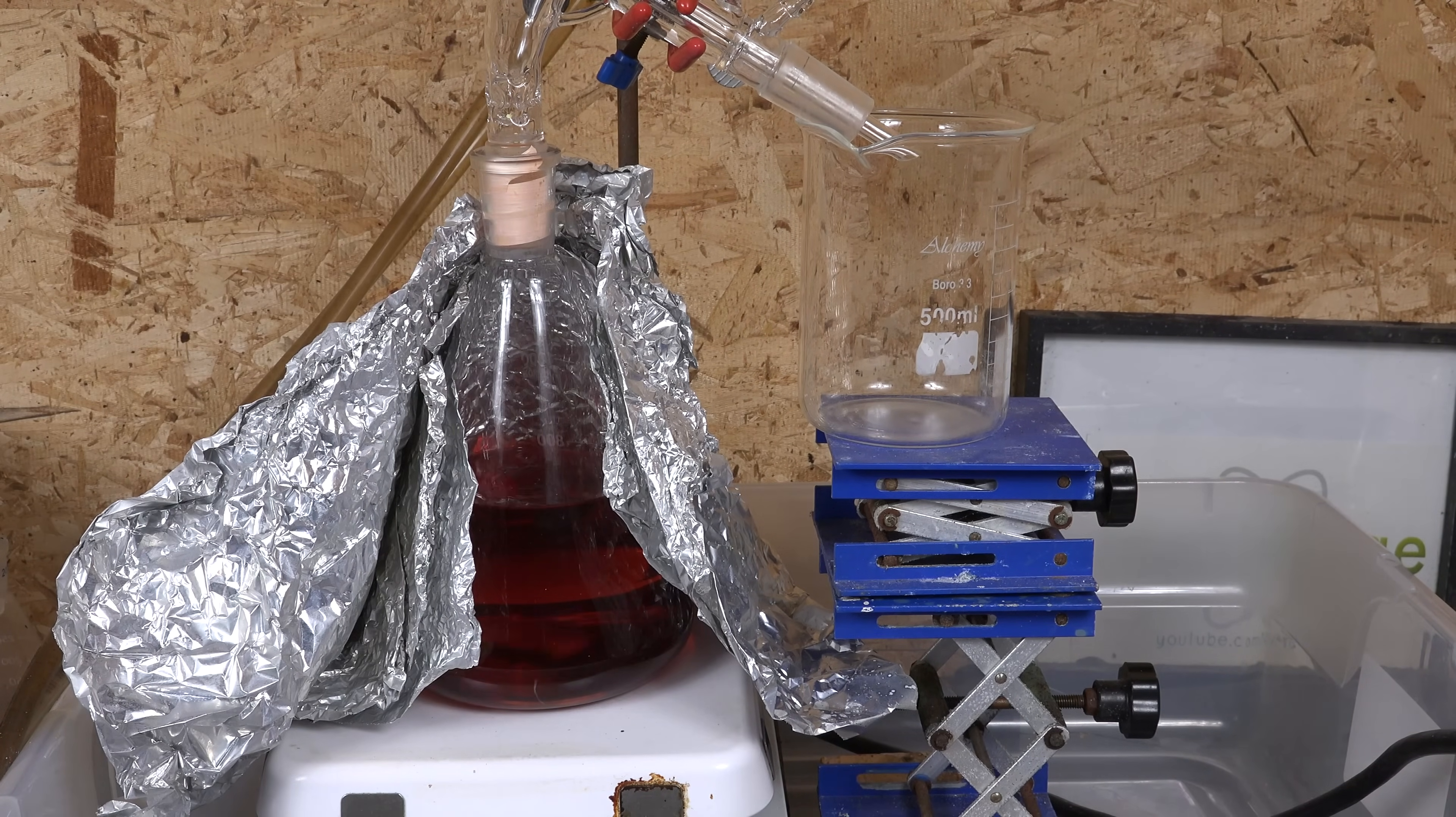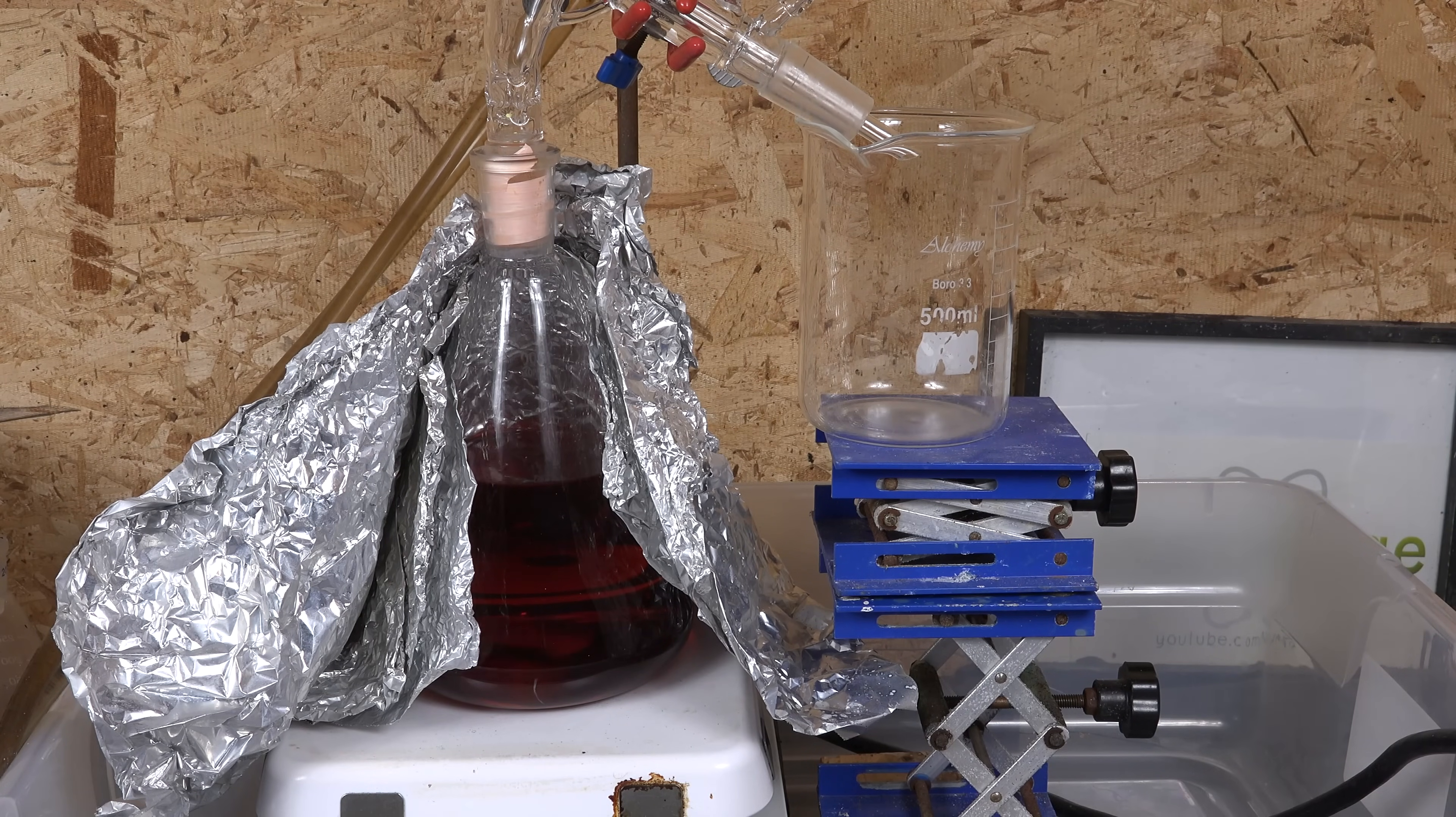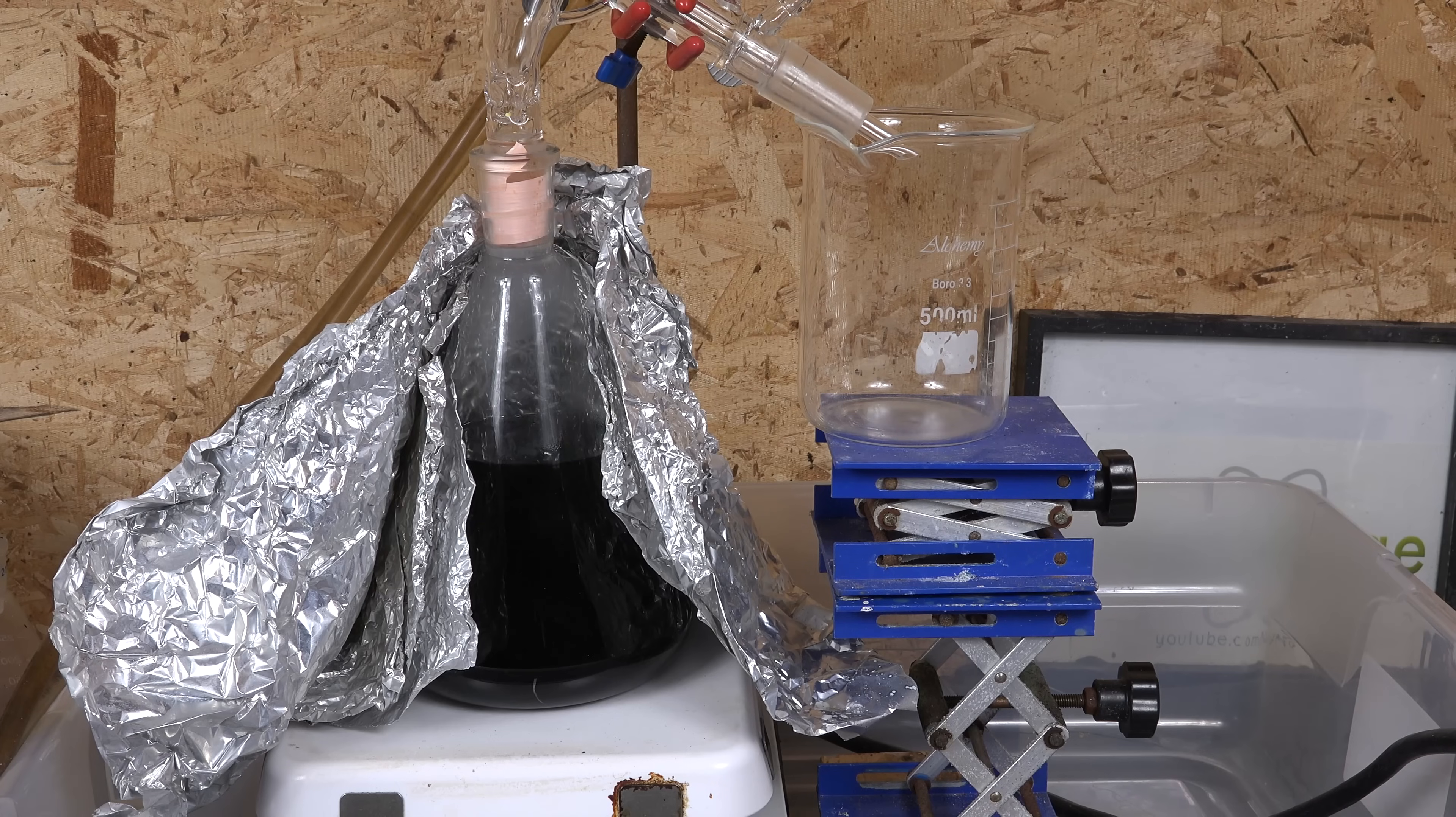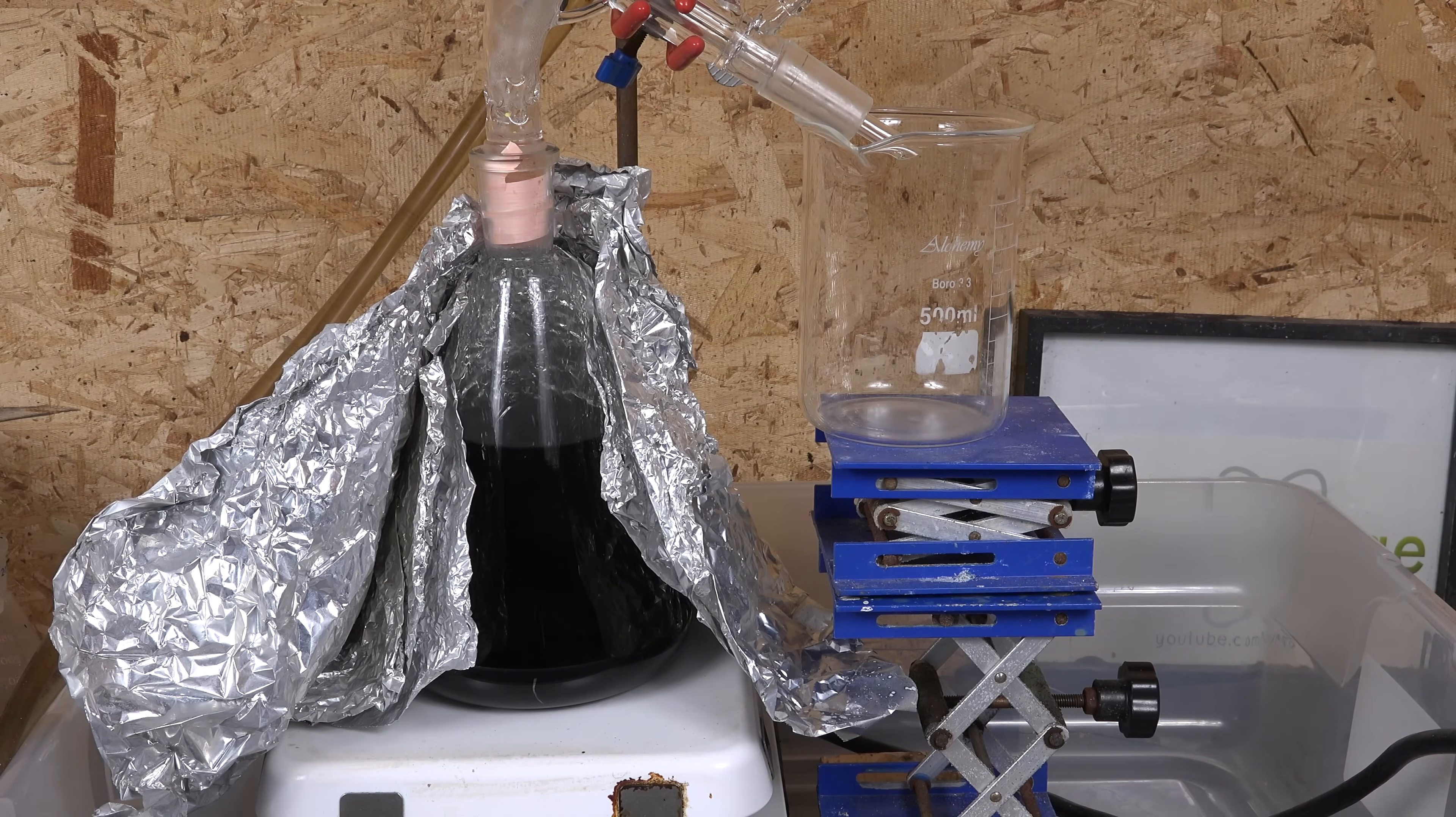At first the sulfuric acid expands and darkens as the impurities char and decompose. Drain cleaner grade acid tends to be the waste product of industrial processes, which is why it has these impurities. Depending on the source it can still be very good acid so for reactions like making nitric acid, it's easier to just use the drain cleaner acid directly and distilling it is unnecessary. But for sensitive work like analytical chemistry or electroplating, pure acid is desired.